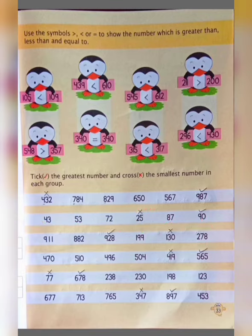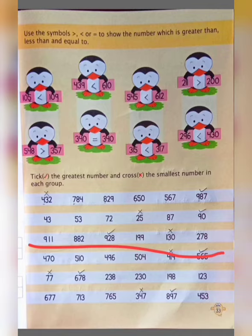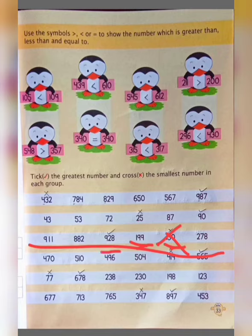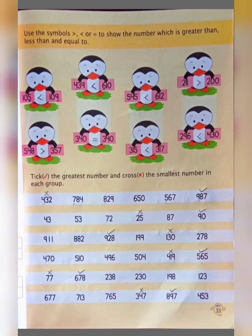In the same way, next group: 911, 882, 928, 190, 9, 130, and 278. The smaller hundreds digits — 1 and 1 — are in 190 and 130, so we compare their tens place: 9 and 3. Since 3 is smaller, we cross 130. For the greatest, the hundreds digit 9 appears in 911 and 928. Comparing those, 928 is greater, so we circle 928.